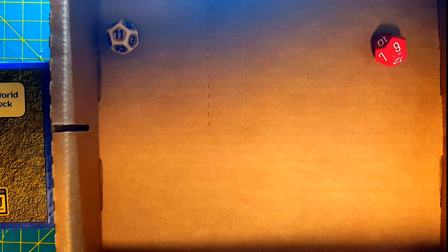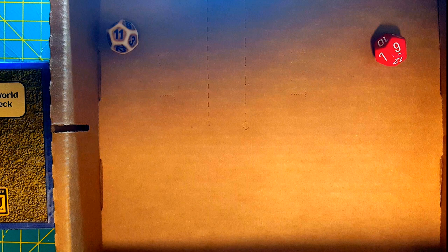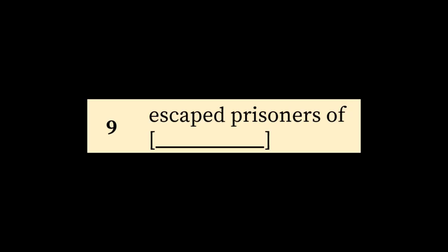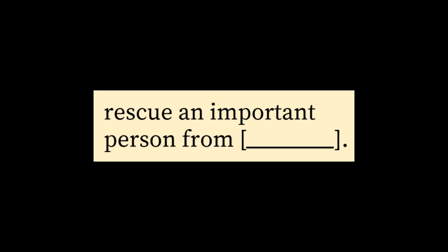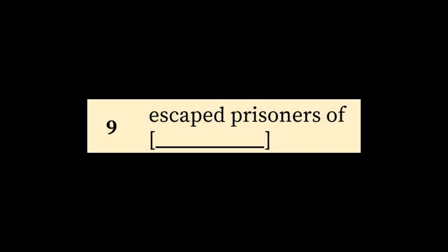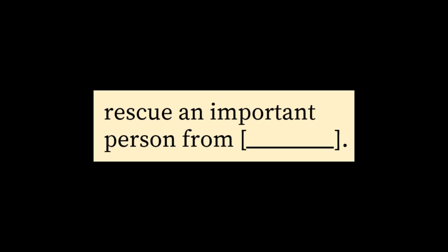Next we'll roll on the party dynamic table. We use the red die for the 'you are' column and the white die for the 'attempting to' column, giving us a sentence: you are escaped prisoners of blank, and we are attempting to rescue an important person from blank. We don't have to fill in those blanks yet. Since we're doing solo play, I am an escaped prisoner, and those blanks could stand for a person or a place — we can use our imagination.